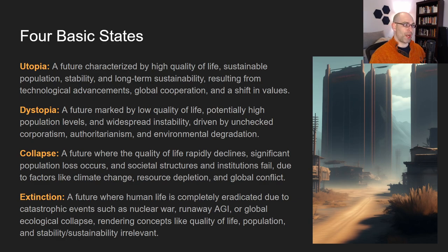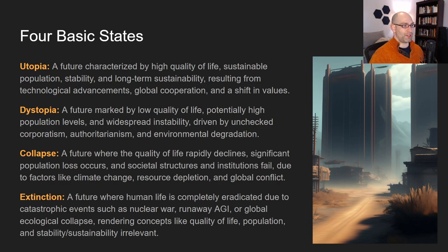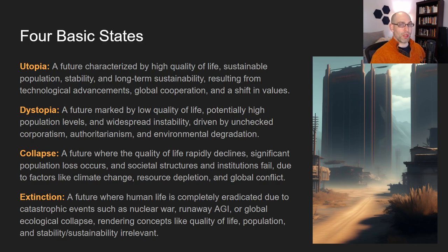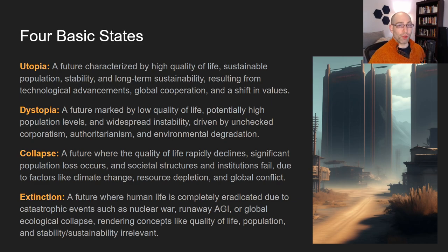Collapse is another possibility where quality of life and population both rapidly decline. This could be due to extreme failures such as ecological collapse or global conflict. And then finally, extinction is where humanity goes extinct — for whatever reason. This could be that the earth becomes uninhabitable due to extreme climate change, nuclear war, runaway AGI, and all sorts of things. There are several existential threats we are aware of, including natural ones like a comet strike.